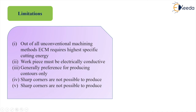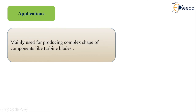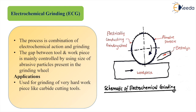Because specific cutting energy is highest in ECM, the MRR will be lower for a given material. The workpiece must be electrically conductive. ECM is generally preferred for producing contour surfaces; sharp corners are not possible to produce. The main application of ECM is producing complex shapes such as turbine blades.